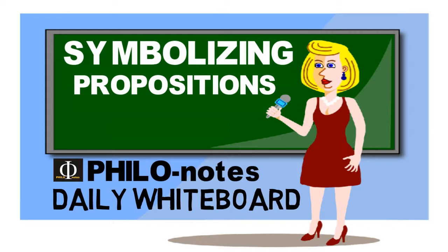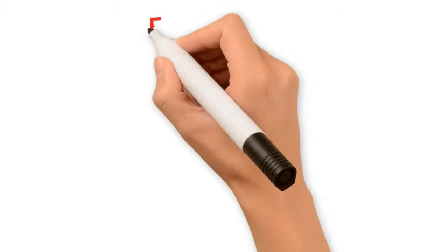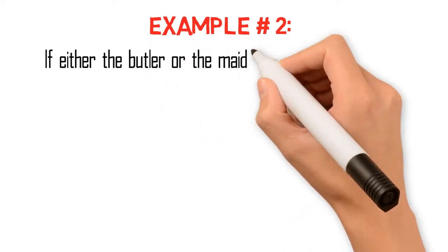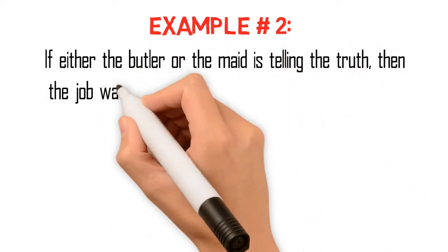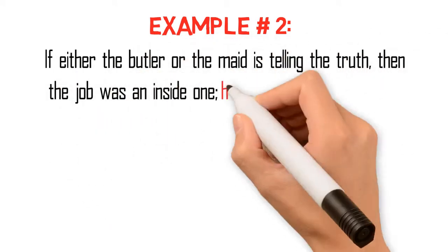Now without further ado, let's symbolize another sample proposition here. Suppose we have this proposition: if either the butler or the maid is telling the truth, then the job was an inside one.